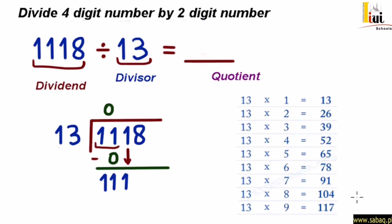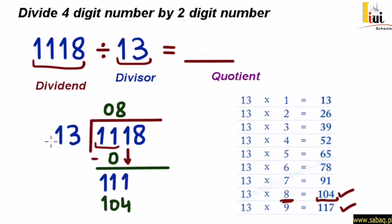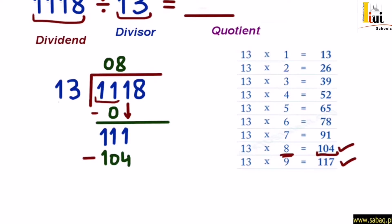अब अगर हम देखें, तो यहाँ पर 111, 104 और 117 के दर्मियान में आता है। तो हमने 111 से छोटे नंबर वाला digit लेना है: 13×8 = 104। अब 111 में से minus करेंगे 104 को। 1 minus 4 नहीं हो सकता, तो हम borrow लेंगे। 11 minus 4 = 7, और 1 minus 1 = 0। तो result है 07।